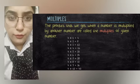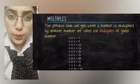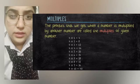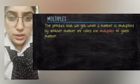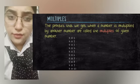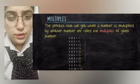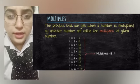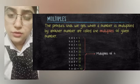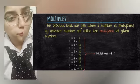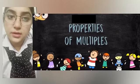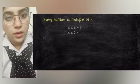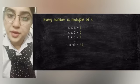Like in the table of four, the products 4, 8, 12, 16, 20, 24, 28, 32, 36, and 40 and so on are multiples of four. Now let's understand the properties of multiples. The first property is every number is a multiple of one.